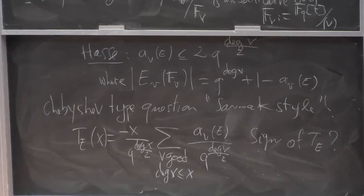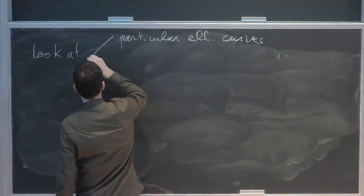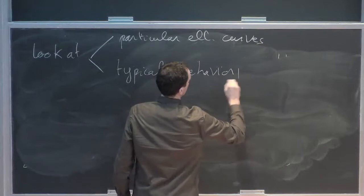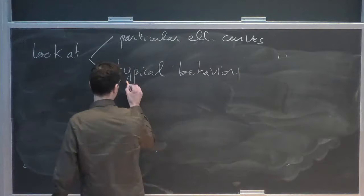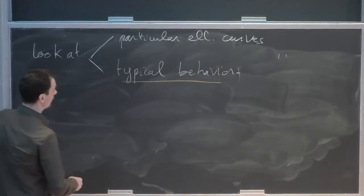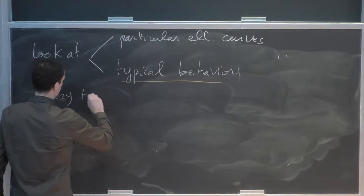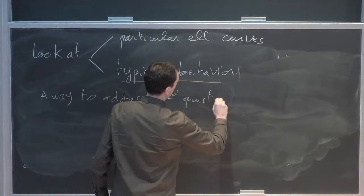So there are two ways we can start investigating this question again, as in the previous settings. Either look at the general, the so-called generic typical case, and first define it maybe. Or look at particular families of elliptic curves. So let me address, I won't have time to address the first one. Let me just give the necessary notation to write down the theorem regarding the second one.